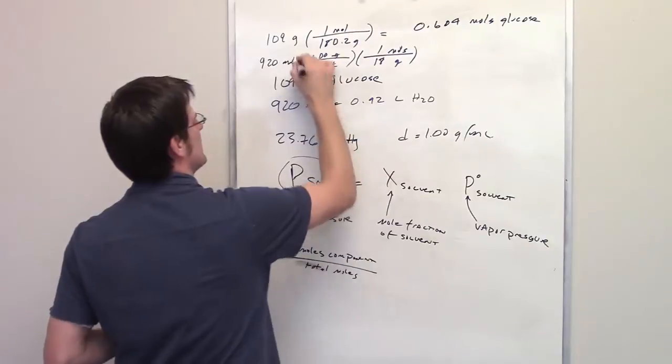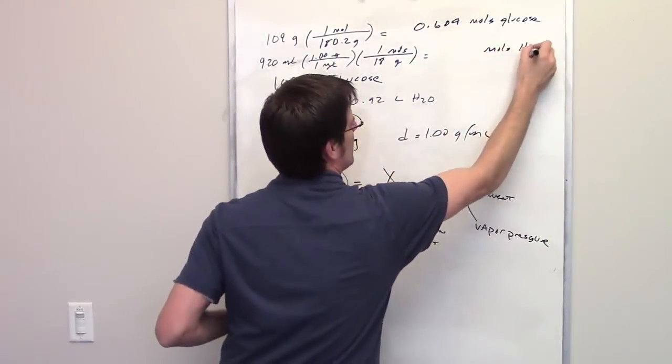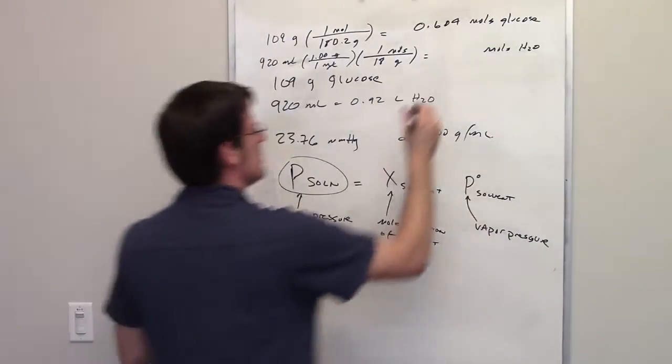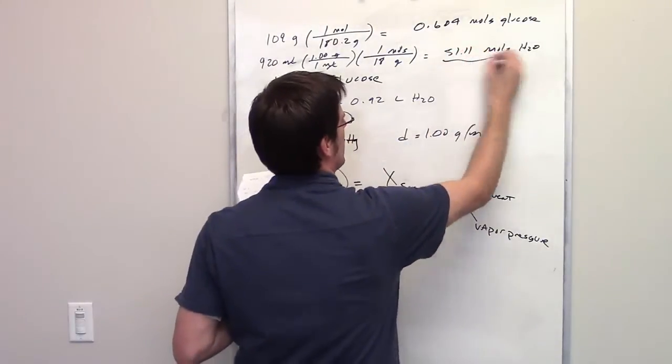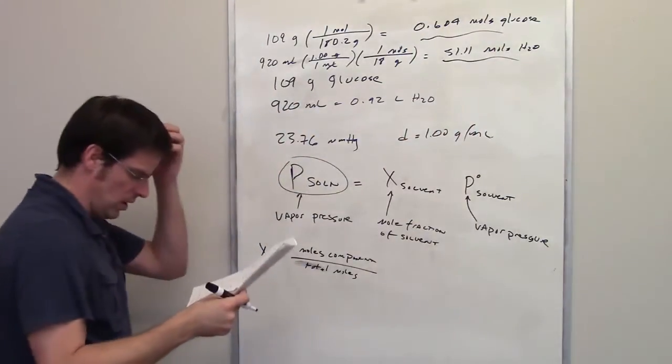Grams cancel each other out, milliliters cancel each other out, and I'm left with moles of water. That comes out to be 51.11 moles of water. That's how many moles there are in 920 milliliters.